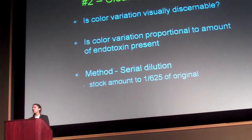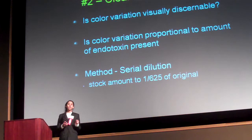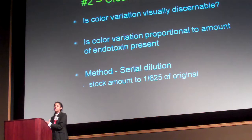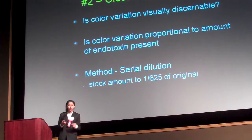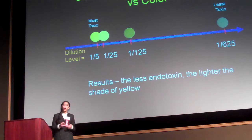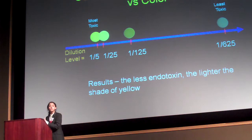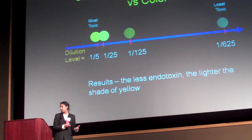My next goal was determining a color graduation scale — I wanted to know if the amount of endotoxin detected actually corresponded to a color change. I found that this was the case. I did a dilution series and found that the more endotoxin detected, the darker the color changed, and the less endotoxin detected, the lighter the color changed.